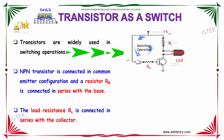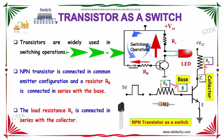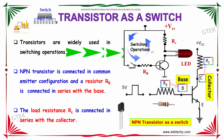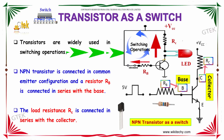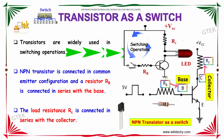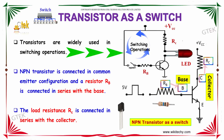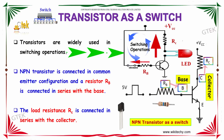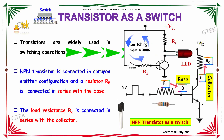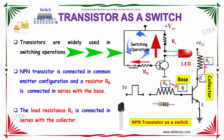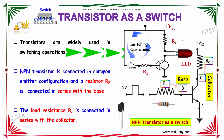Transistors are widely used in switching operations. The NPN transistor is connected in common emitter configuration, and a resistor RB is connected in series with the collector. You have RB connected to your base and RC connected to your collector.